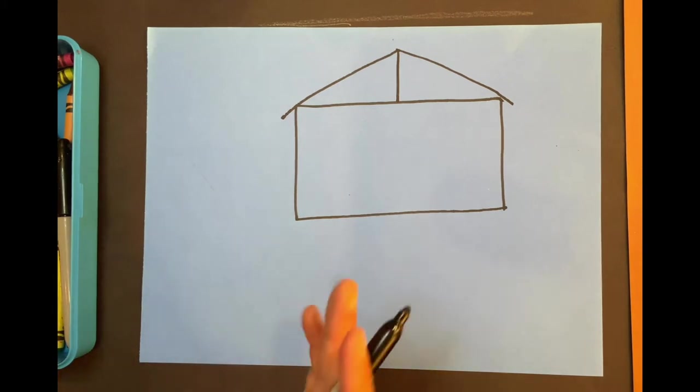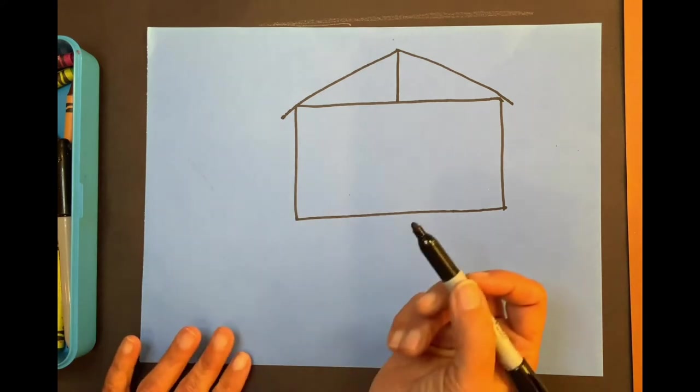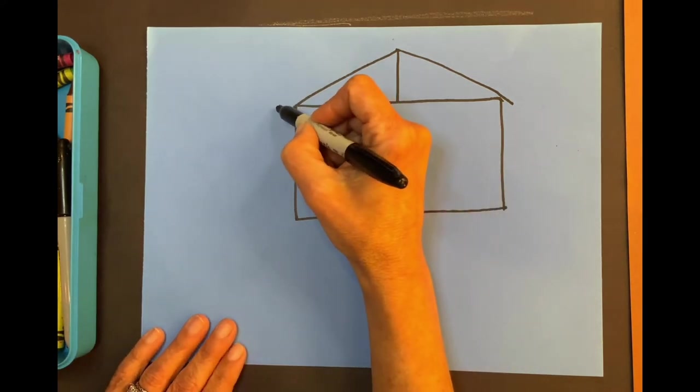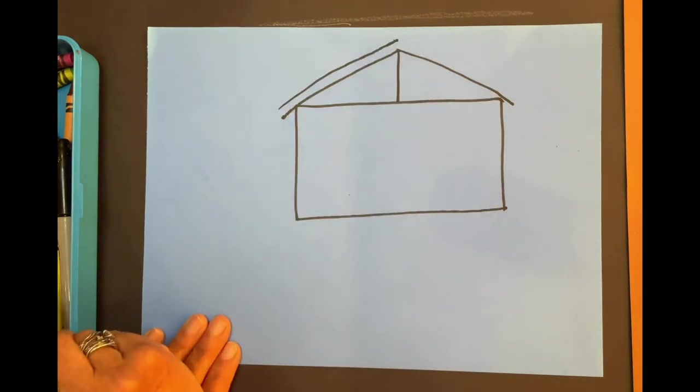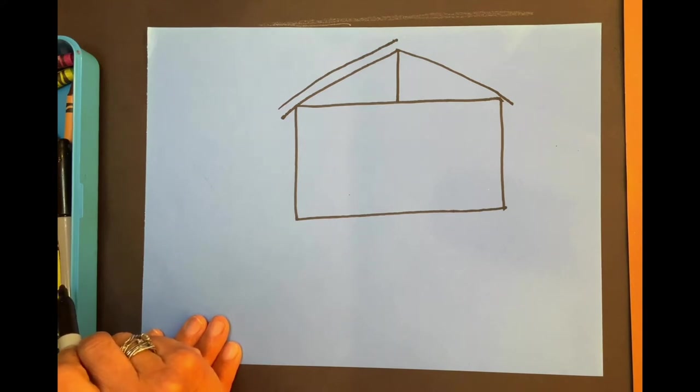Good. Sometimes we're going to draw these double lines. That means two of the same thing, kind of like twins. Watch Ms. Roz. Here is my double line for the roof. This is the boards that hold the roof up. There's one on the left. It's your turn.